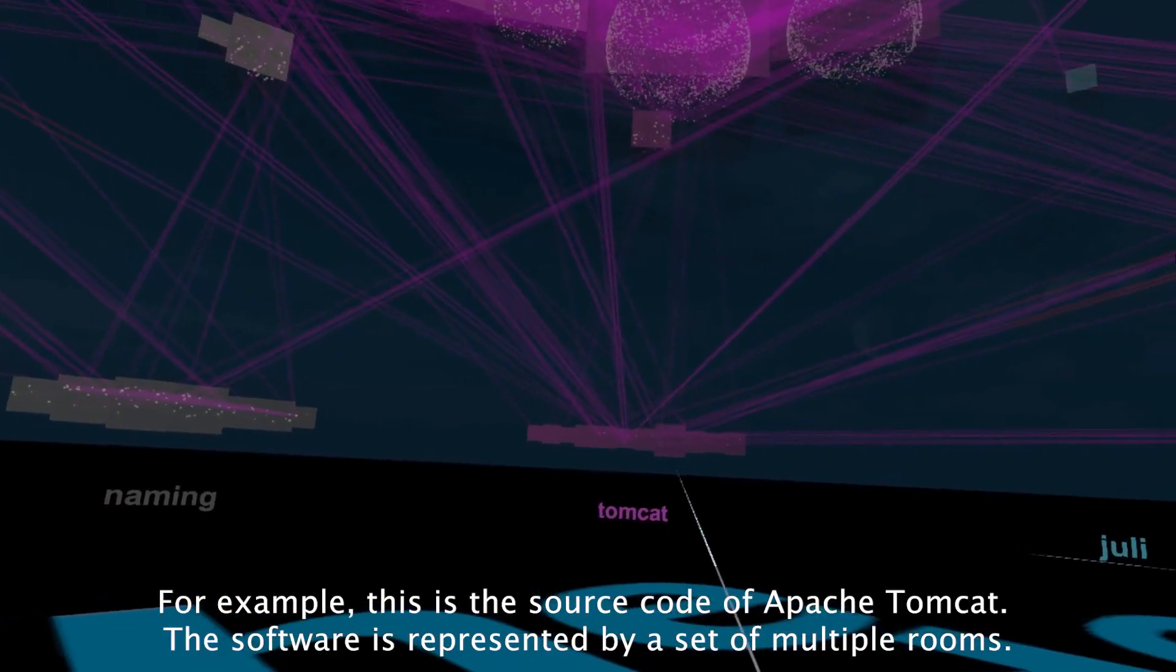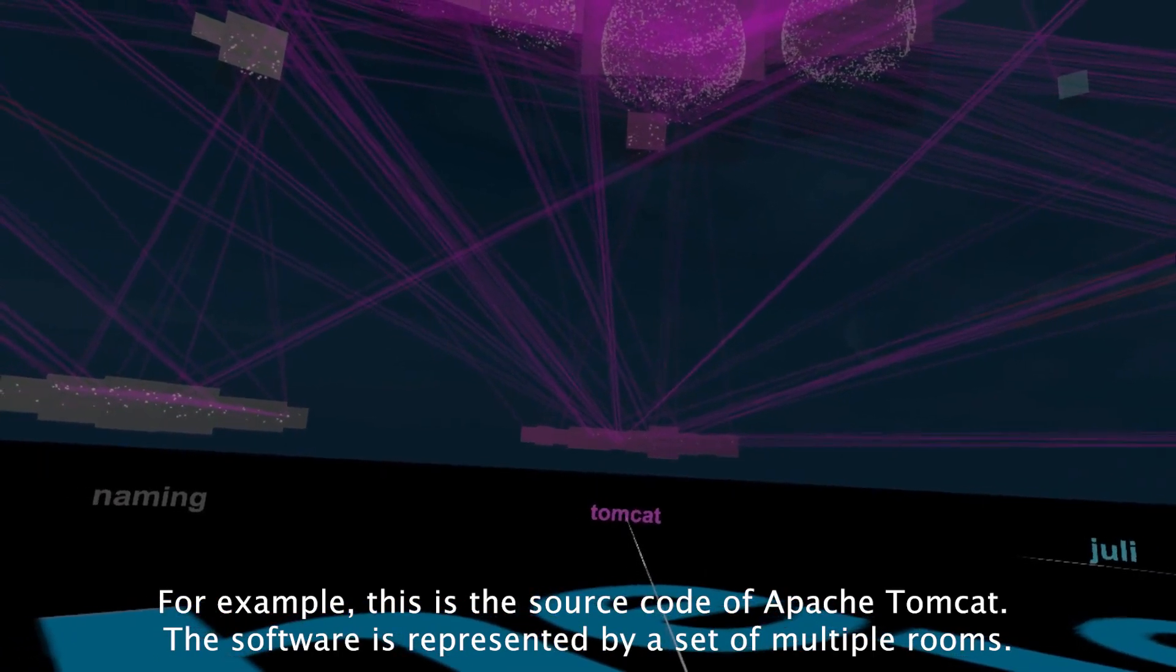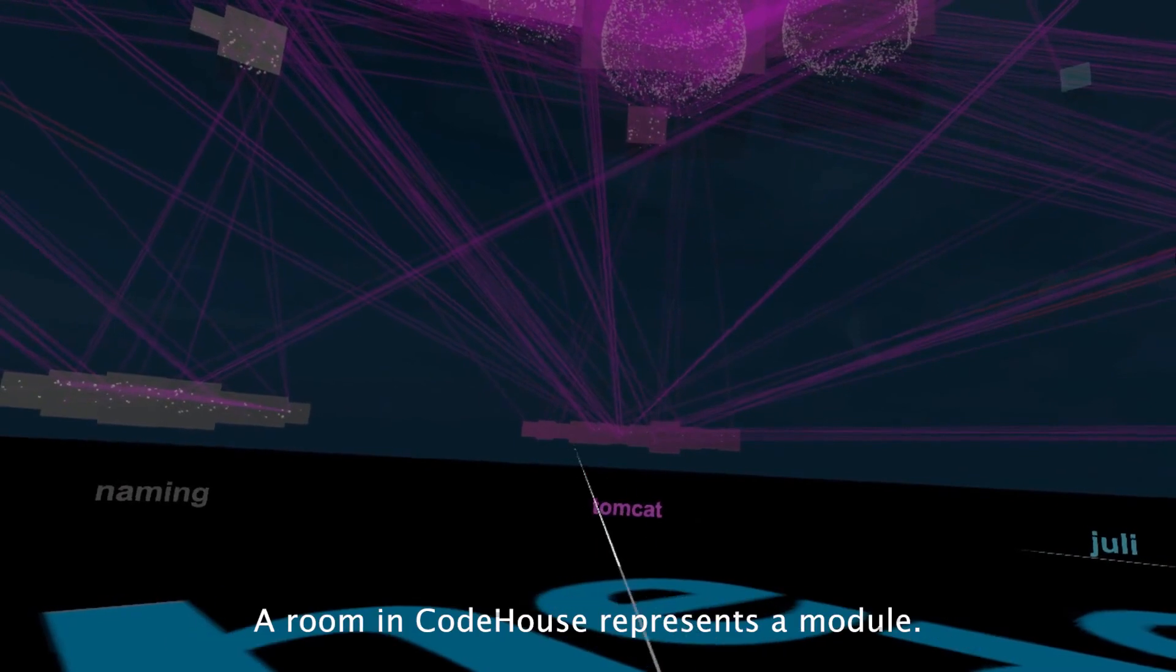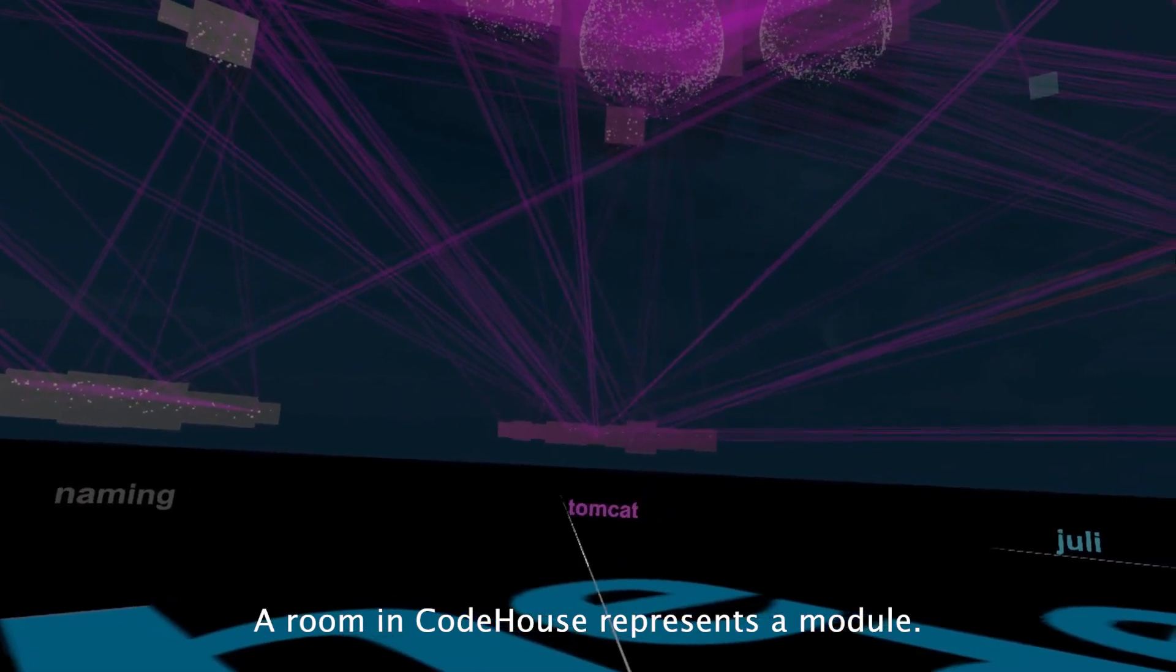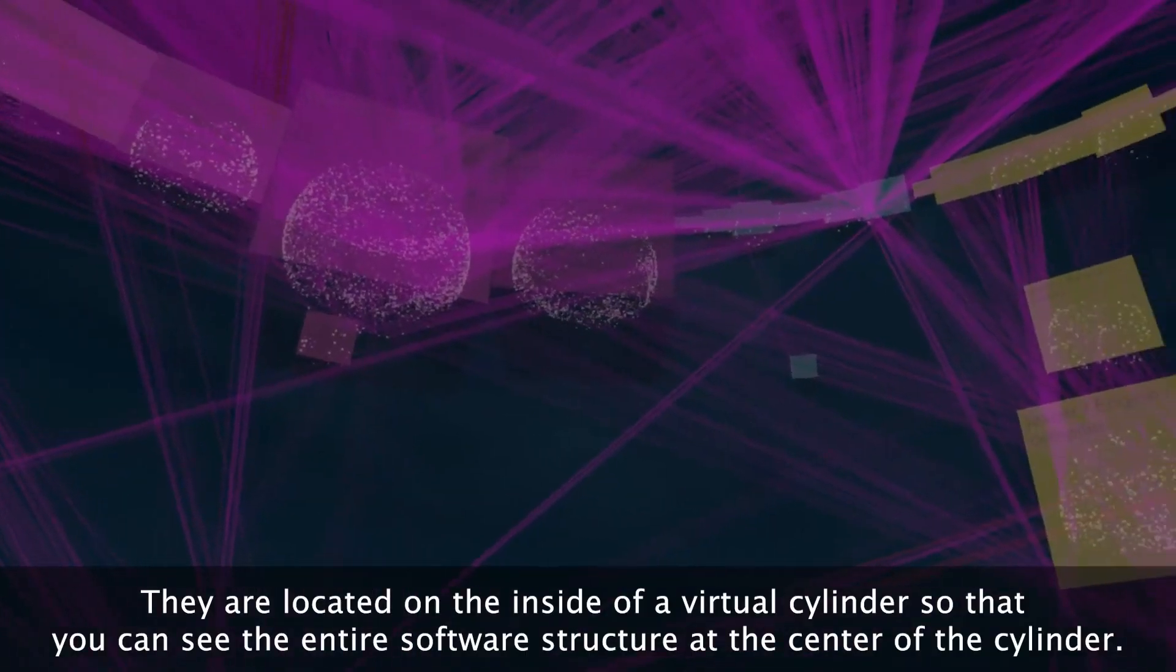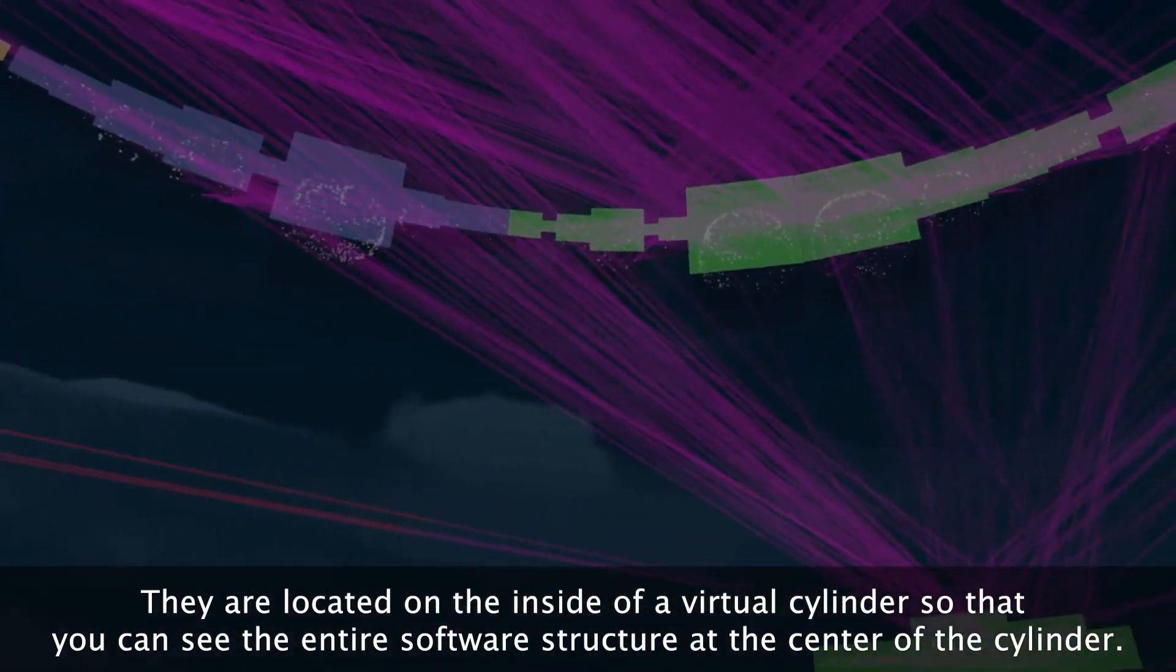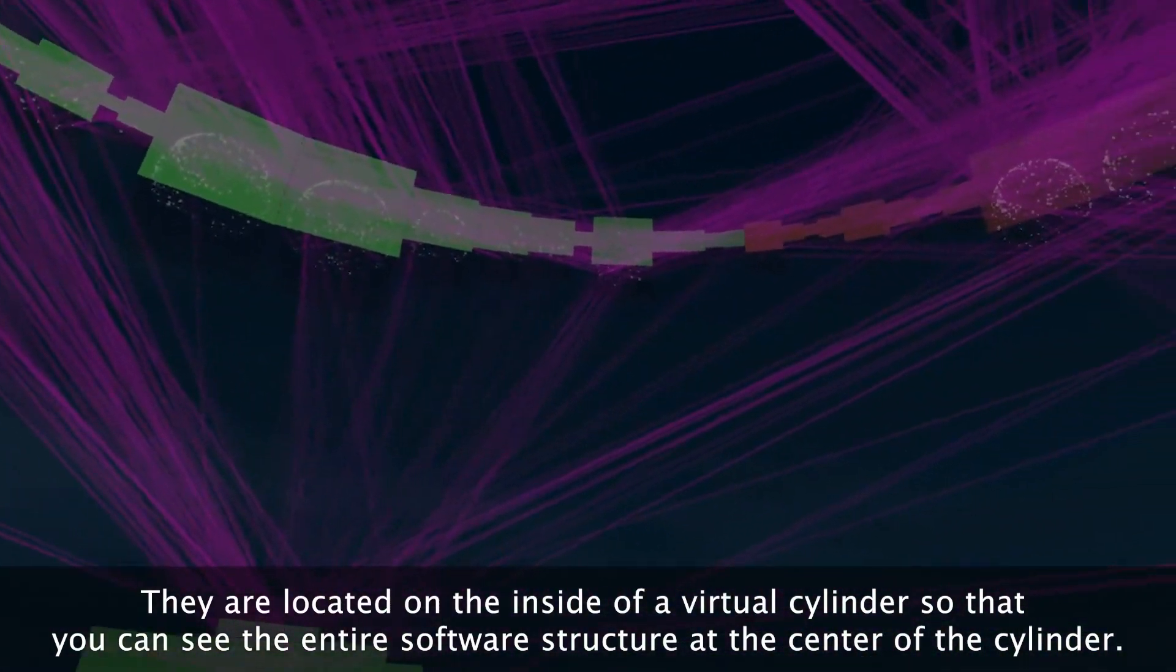For example, this is the source code of Apache Tomcat. The software is represented by a set of multiple rooms. A room in CodeHouse represents a module. They are located on the inside of a virtual cylinder so that you can see the entire software structure at the center of the cylinder.